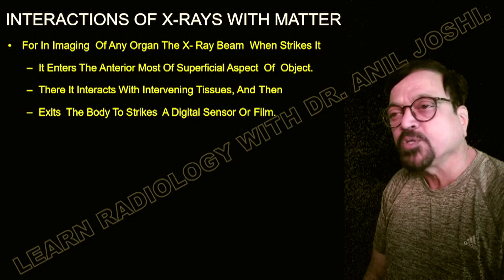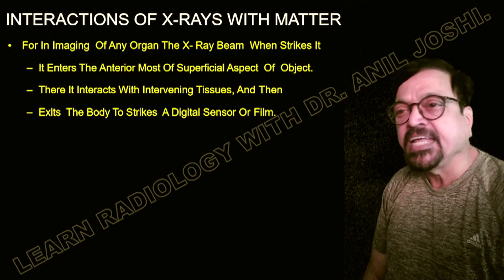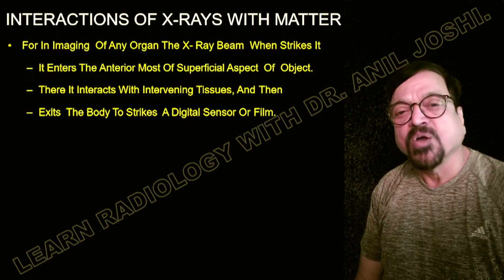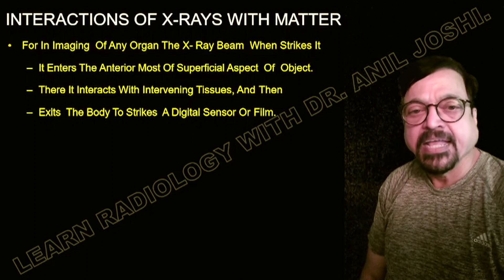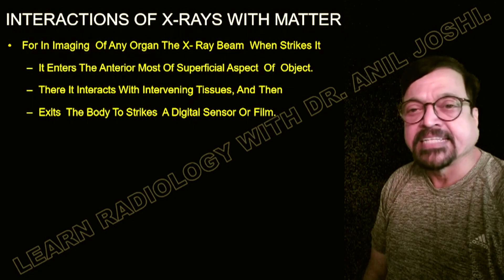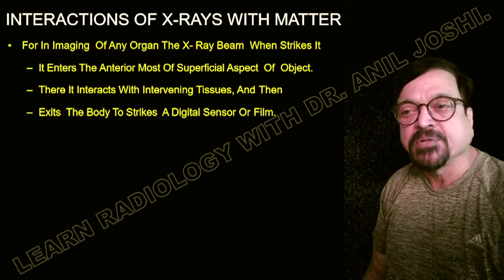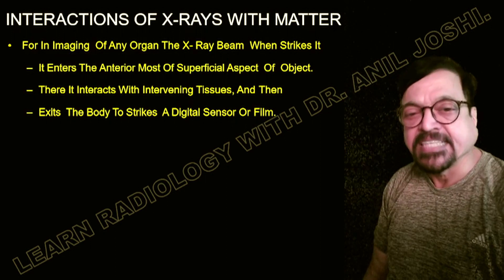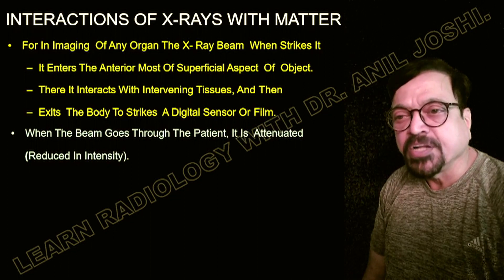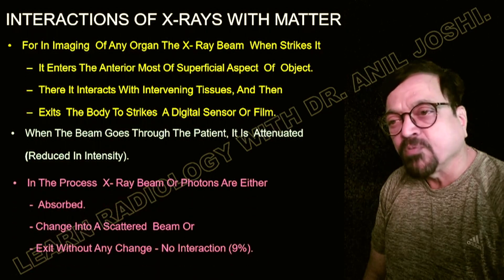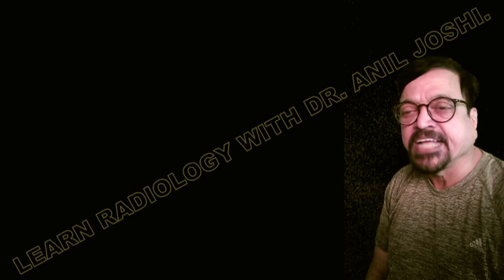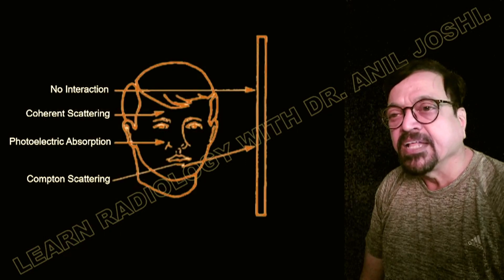When an x-ray beam strikes a body part for imaging, it enters the anterior-most or superior-most part of the object, interacts with the intervening tissues, and then exits the body to strike a digital sensor or film. Different organs either allow the x-ray through, partially absorb it, or totally stop it. When the beam goes through the patient, it is attenuated — reduced in intensity. In this process, x-ray photons are either absorbed, changed into a scattered beam, or exit without any change.